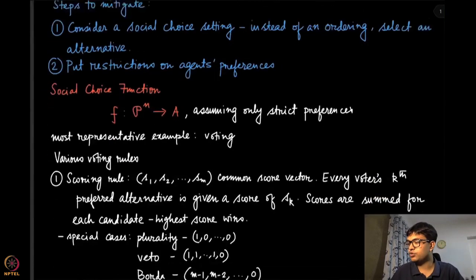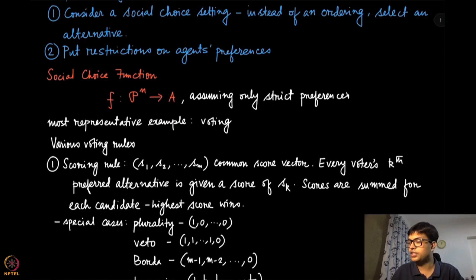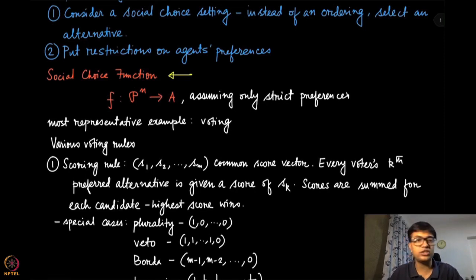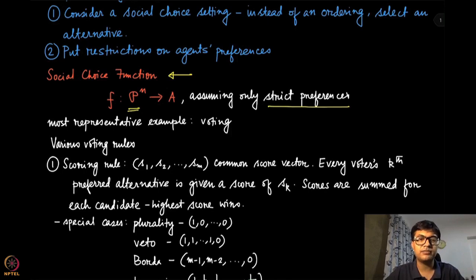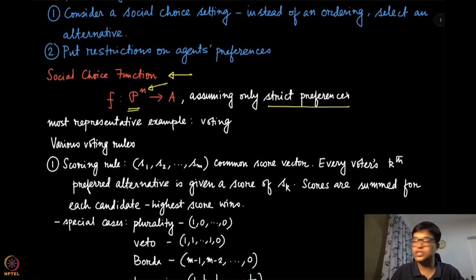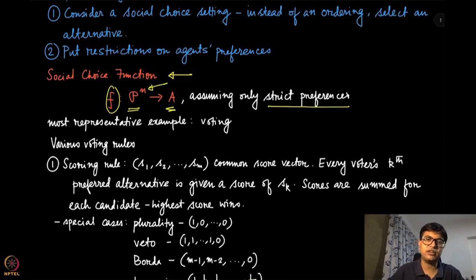This brings us to the setup of the social choice function. The function we will focus on in this social choice setup is what is known as the social choice function. Notice that the left-hand side remains the same. The only difference is that now we are only considering strict preferences — we do not allow for indifferences. If all n agents have their strict preferences given to this social choice function, f will output one alternative rather than a whole ordering over the set of alternatives.